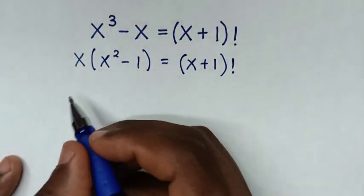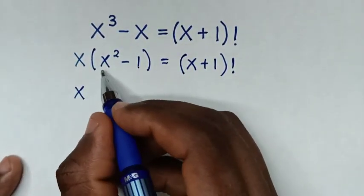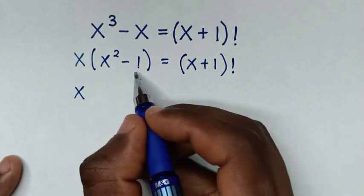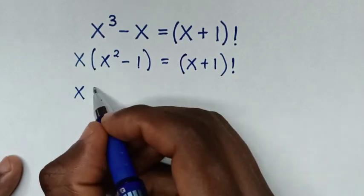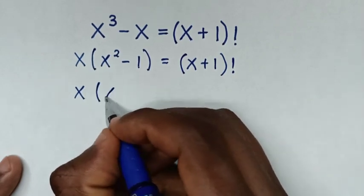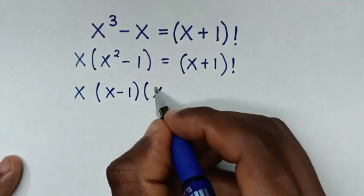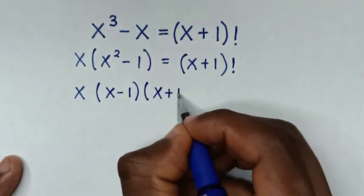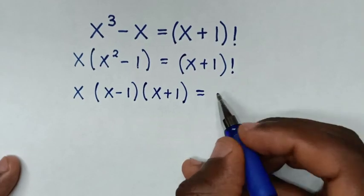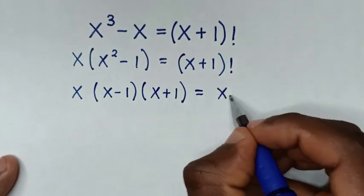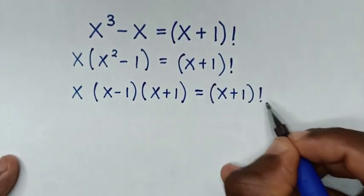Then our equation will be x times (x² minus 1). Now x² minus 1 is a perfect square difference, so it factors as (x minus 1) times (x plus 1). So the left side becomes x times (x minus 1) times (x plus 1), and this equals (x+1) factorial.